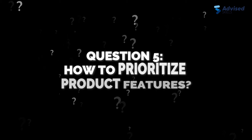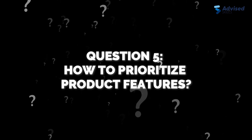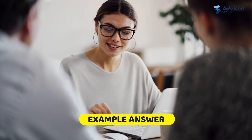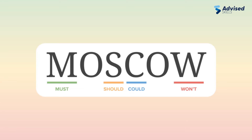Question 5: How do you prioritize product features? This will assess your decision-making process and ability to balance various factors. Example answer: prioritize based on customer value, business impact, and technical feasibility, using methods like MoSCoW.